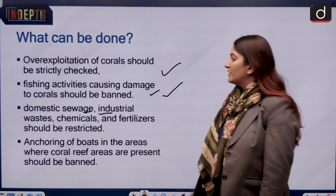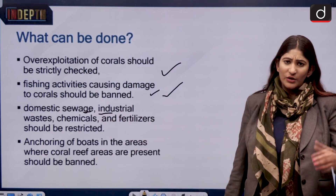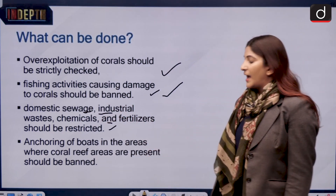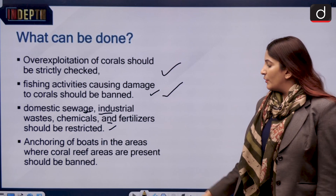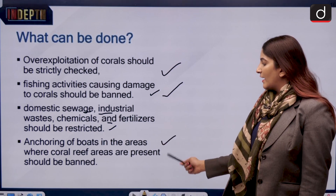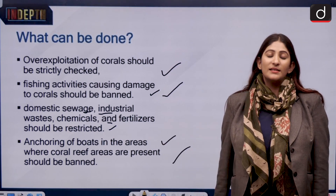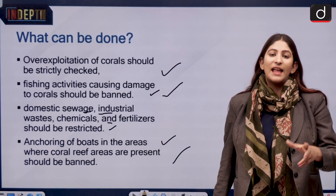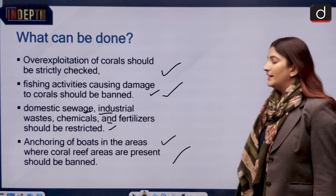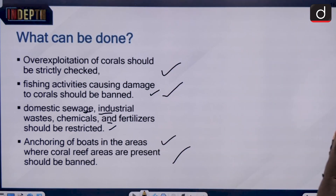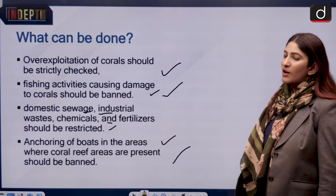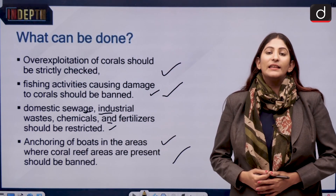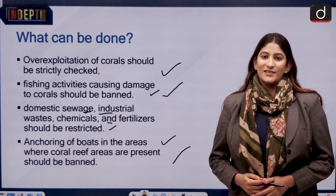Fishing activities that damage corals should be strictly checked. There should also be monitoring of domestic sewage, industrial waste, tourist waste, chemicals, and fertilizers. Anchoring of boats in coral areas should be controlled, as anchors can destroy corals all at once. That's it — thank you so much for watching.